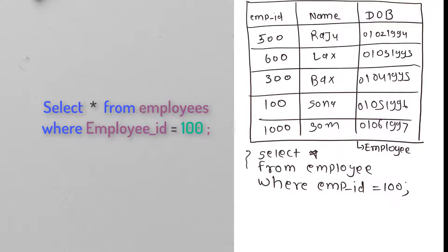Now let's understand how exactly it internally works and how it comes to know which row it's supposed to pick. As soon as this query is triggered or run, it will start to point here at the first row. It will identify how many columns are in the WHERE clause — in this case there is only one column, so the condition evaluation will be done on employee_id.